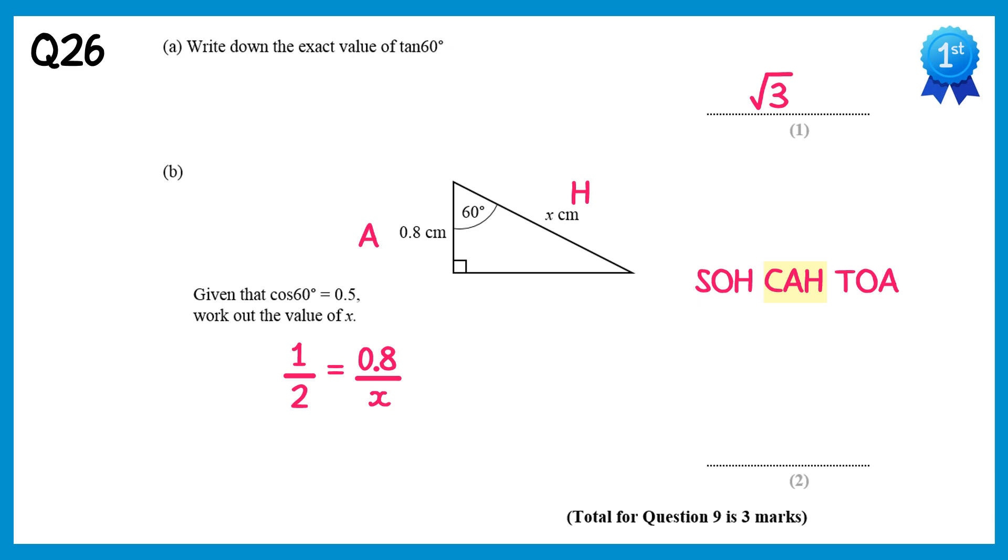If you multiply both sides by 2, that will clear up the half. 2 times 1 half is just 1. If you times the right hand side by 2, you get 1.6, divide by x. If you now times both sides by x, you'll get x on the left, and the x on the right will cancel, so it's 1.6. So x equals 1.6.